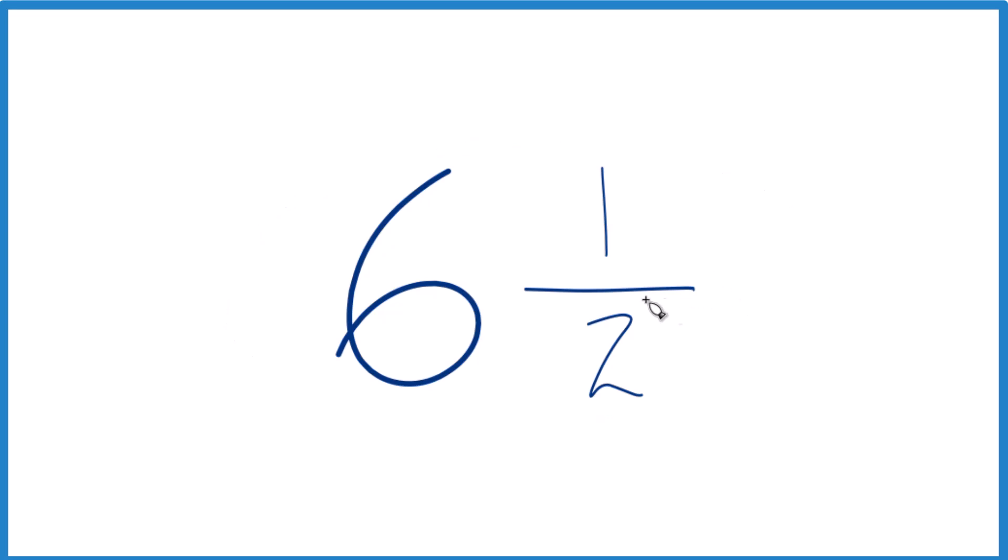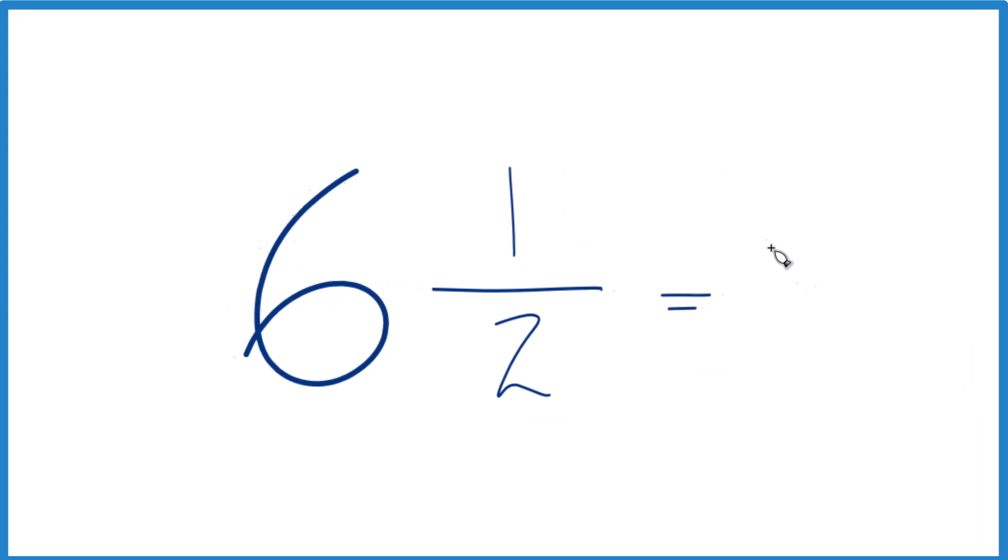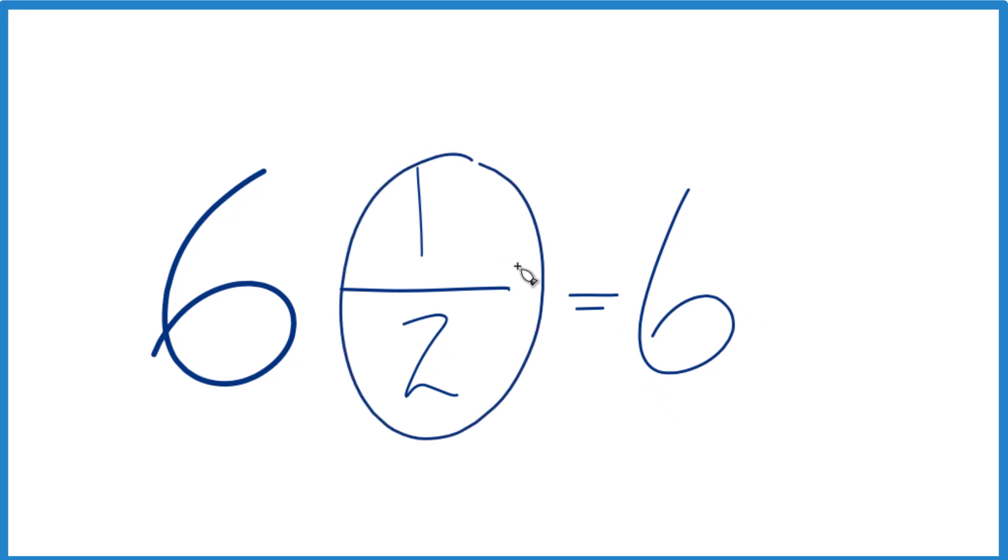Probably the easiest way to do this is to take six, and then we'll just convert one-half to a decimal. That'll give us six and one-half in decimal form.